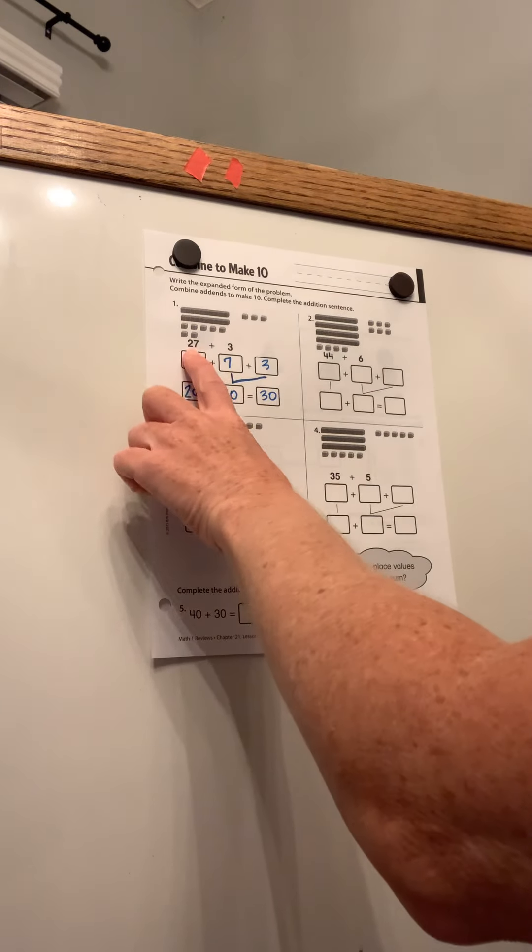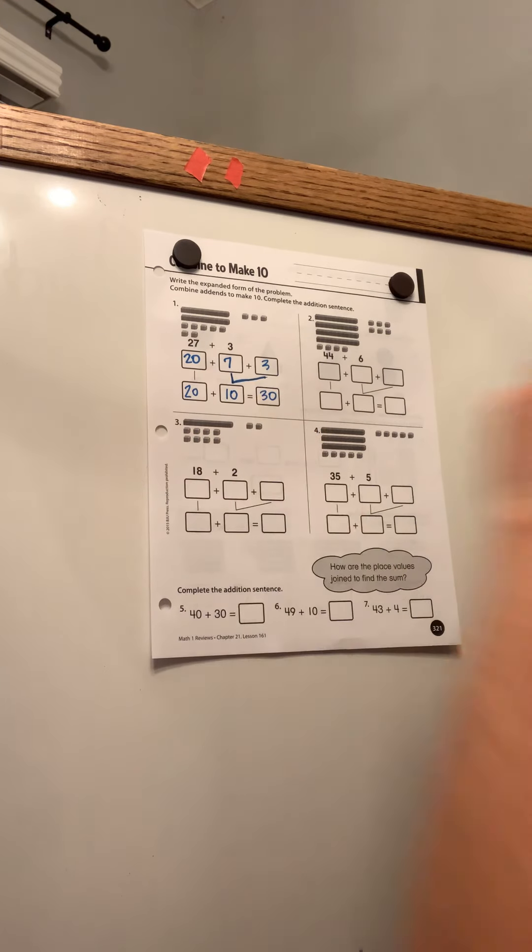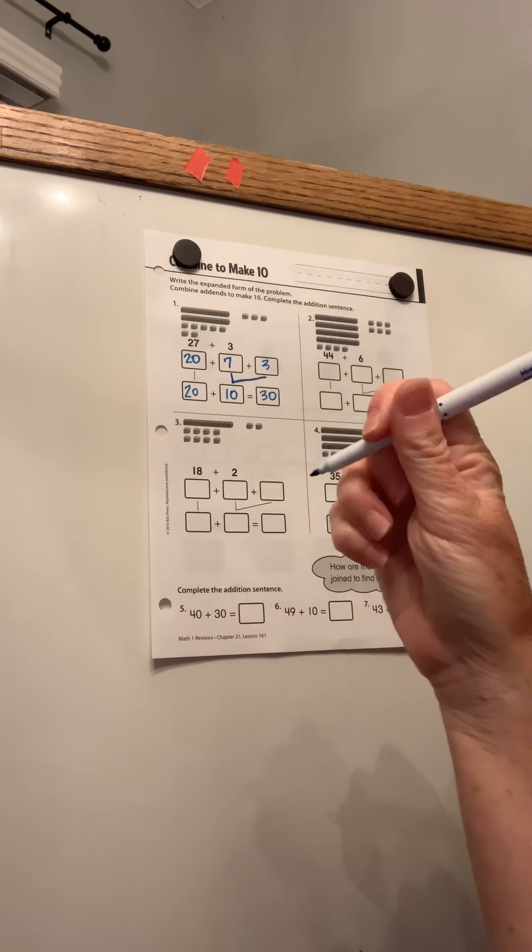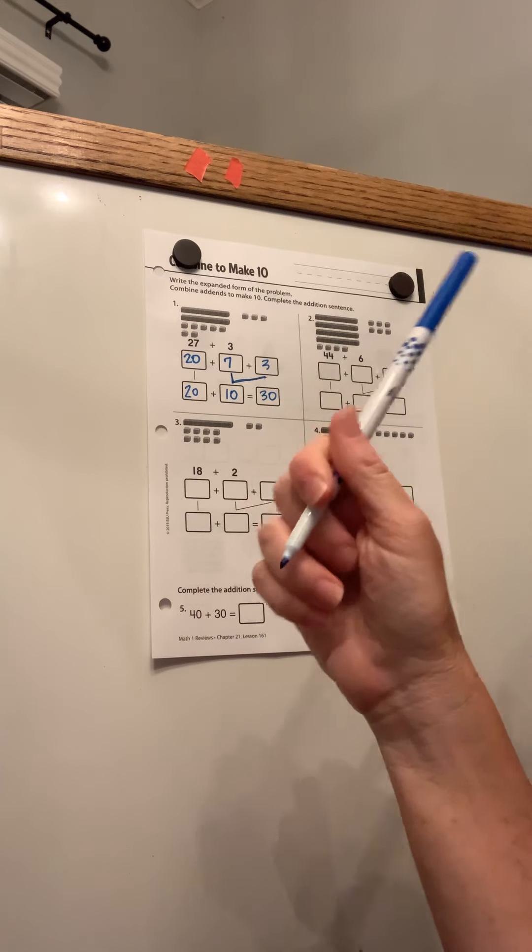So if I added 27 plus three, my answer would be 30. Or if I did it this way, the reason they're having you break it apart into tens is because it is easier to add 20 plus 10 than it is to add 27 plus three in your head for some people. So it's just a strategy.